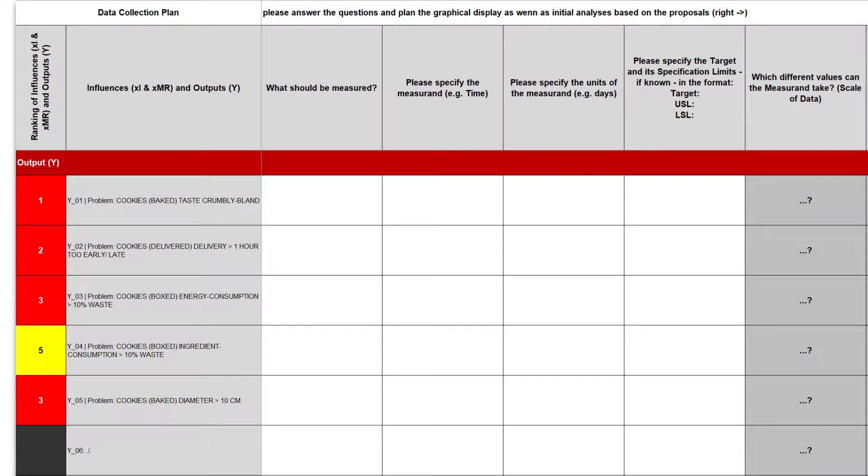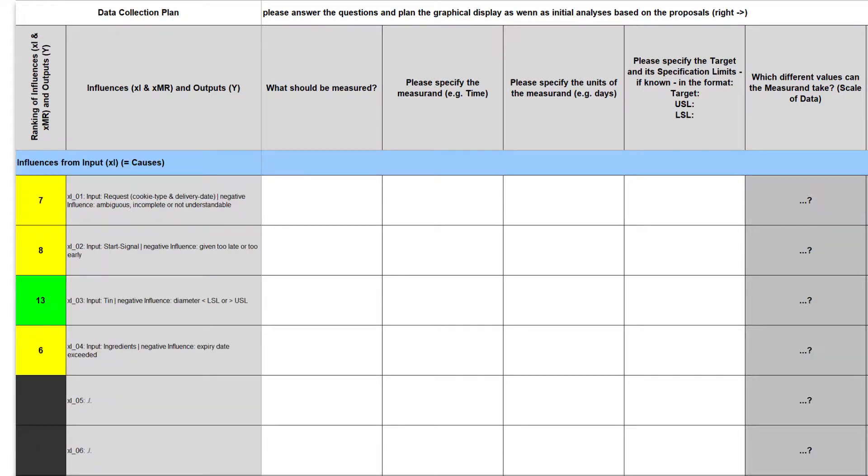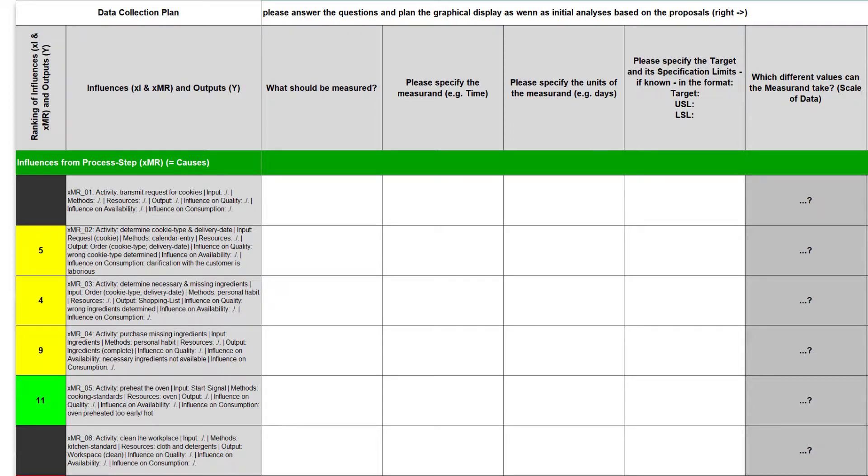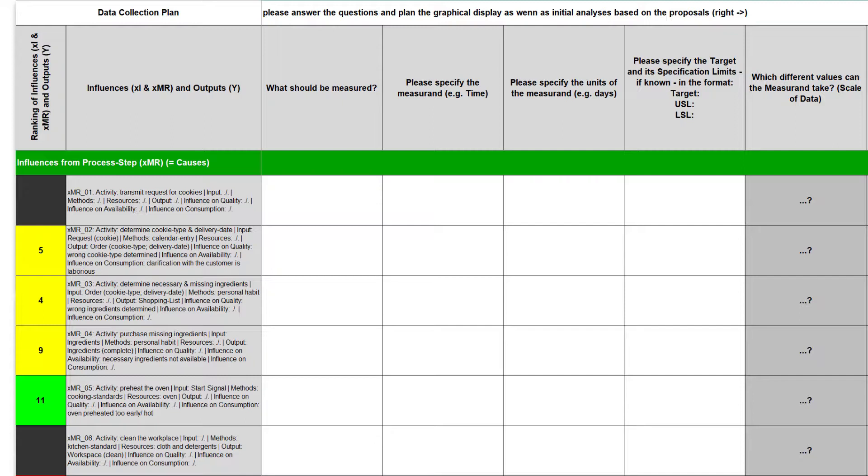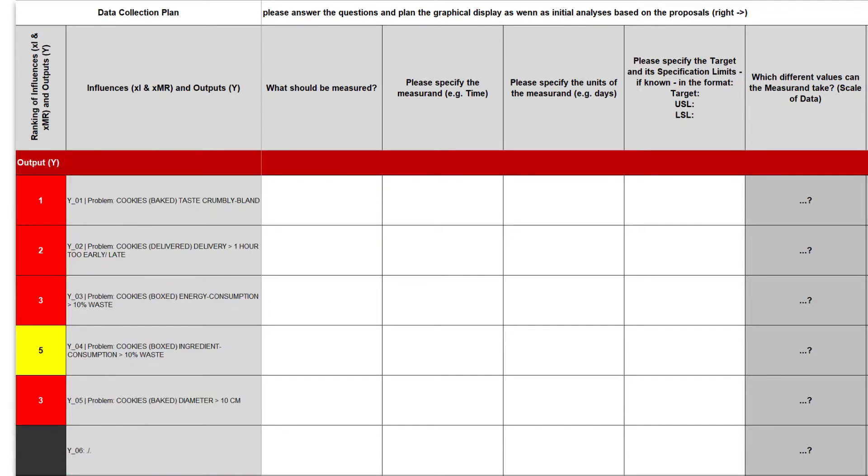In the data collection plan all outputs and their problems as well as all influences from the inputs and activities are listed. The problems are ranked according to their severity and the influences according to their probability of occurrence. To simplify the translation from a problem or influence to its measurement the first question is what should be measured? Please describe here in everyday language what you want to measure to capture the selected problem or the focused influence. For Y1 for example we want to measure the taste of cookies.